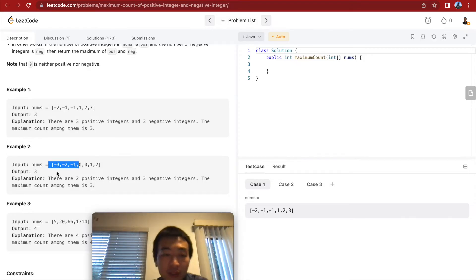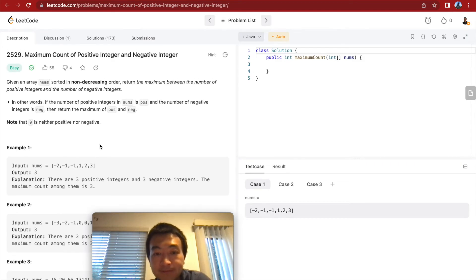So, we got two positive numbers, and three negative numbers. So, the biggest number is three, so we return three instead of counting all of them.